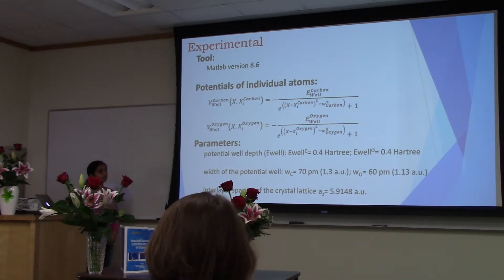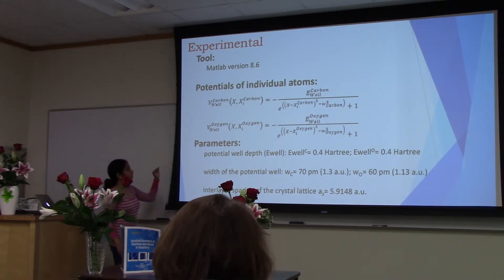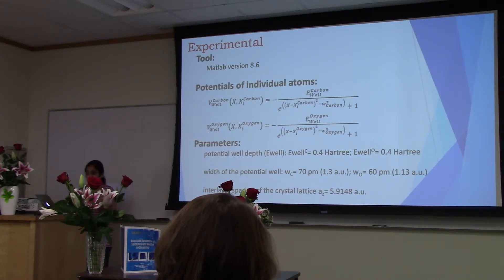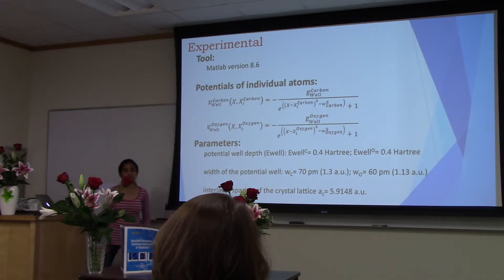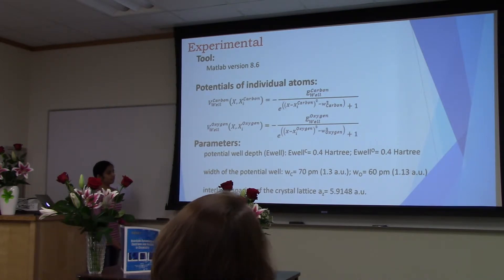For the experimental work, we used MATLAB as a powerful mathematical technique. The potentials for individual carbon and oxygen atoms were defined using specific equations. Parameters were set to obtain agreement with experimental results. The potential well depth for carbon and oxygen atoms — essentially their ionization energies — were set at 0.4 and 0.5 Hartree respectively. The width of the potential wells was based on atomic radii, and the interlayer spacing of carbon and oxygen was approximated at 5.91 atomic units.